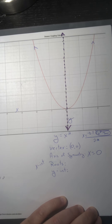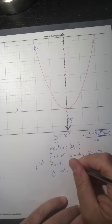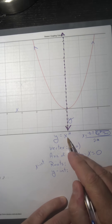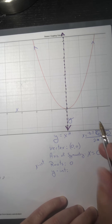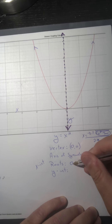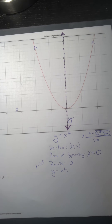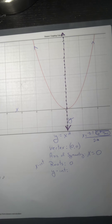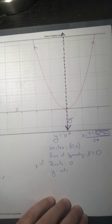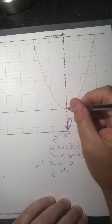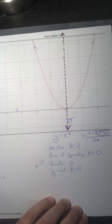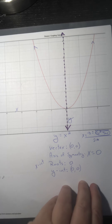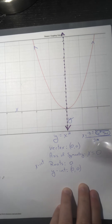This parent graph only touches the x-axis in one place, at zero, so my root is zero. That means the discriminant equals zero, which tells us there is one real answer. For the y-intercept — where does this graph touch the y-axis? That's also (0, 0). I just wanted to show how roots, solutions, and the discriminant all fit together.